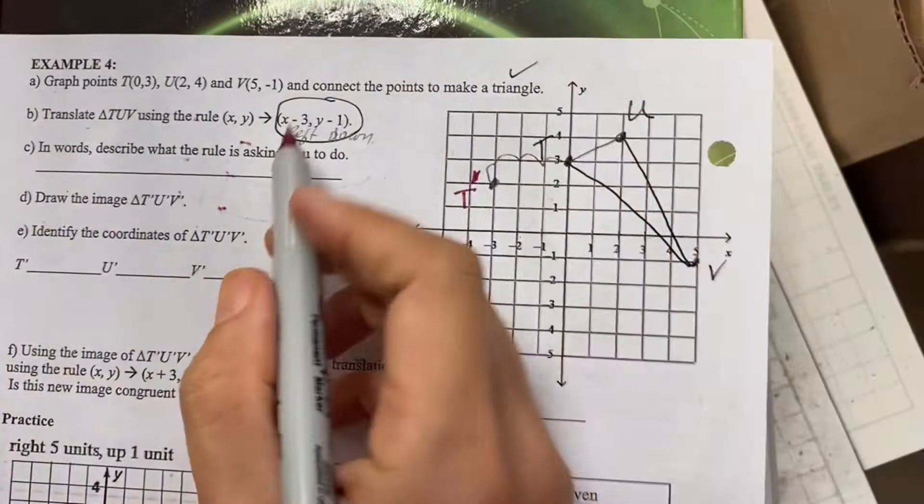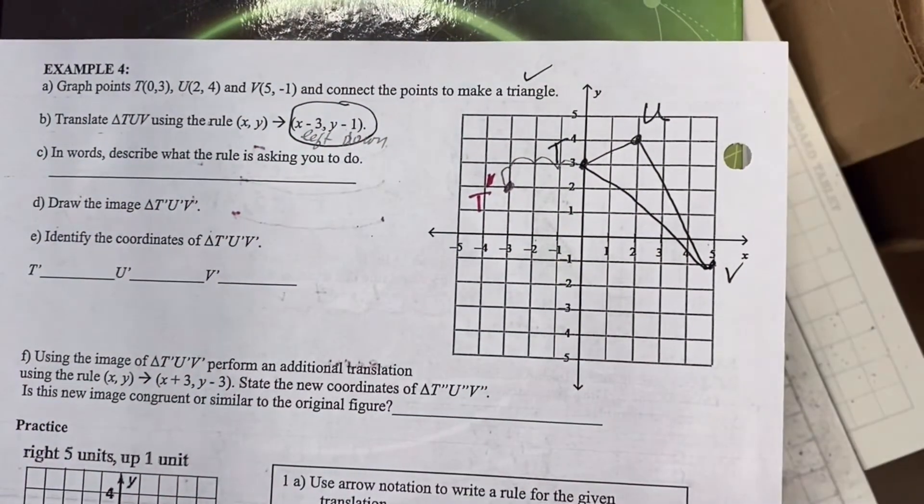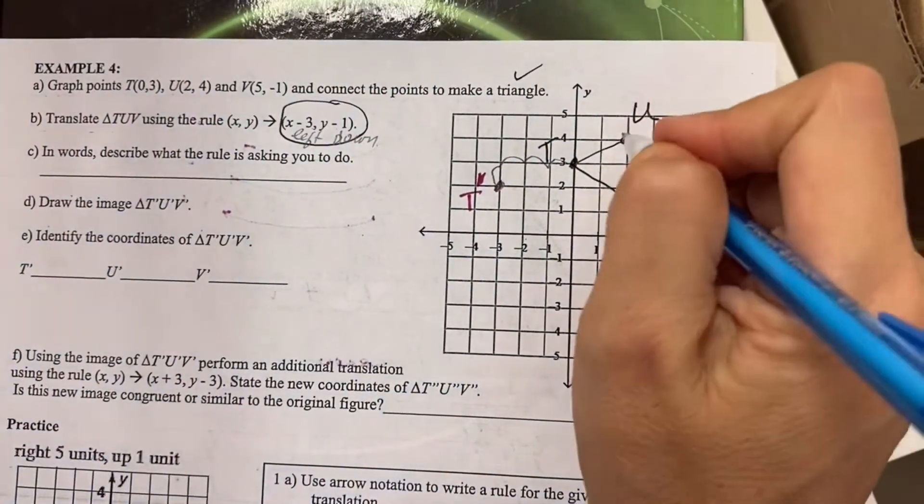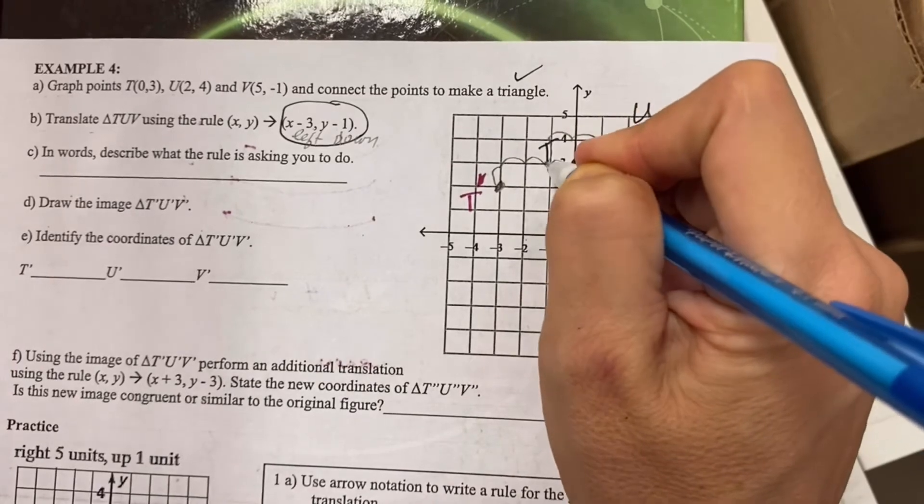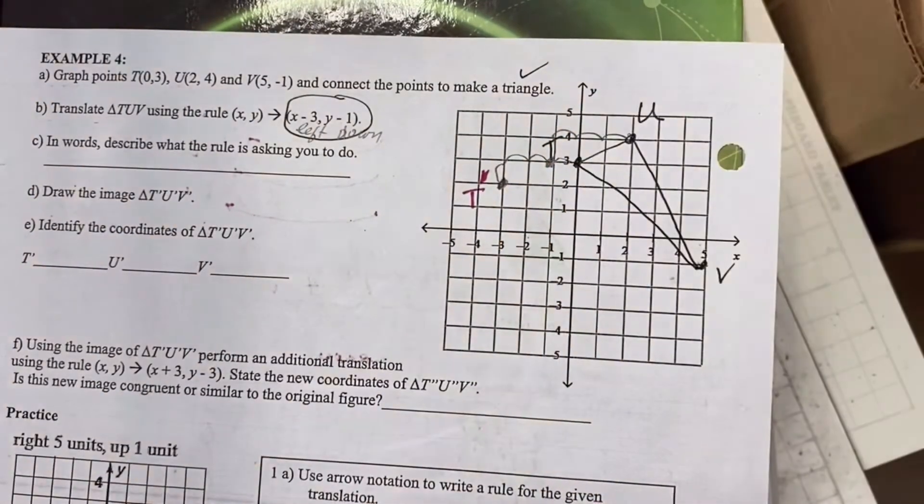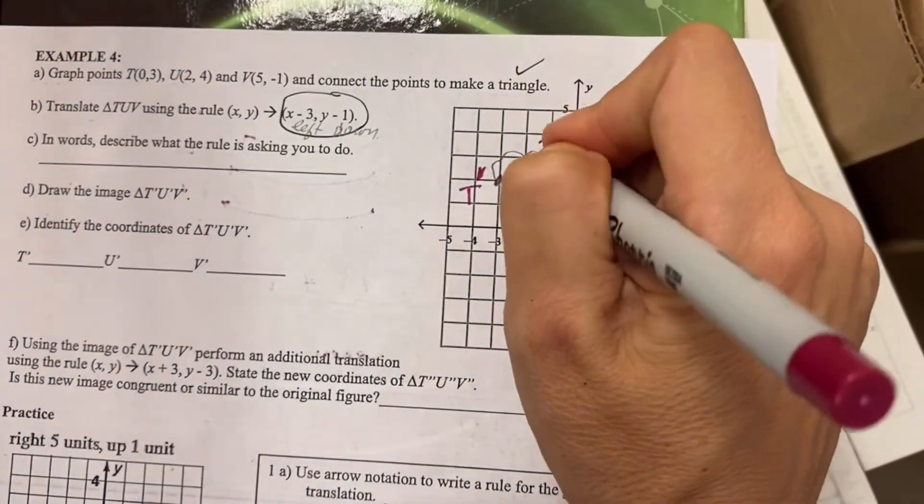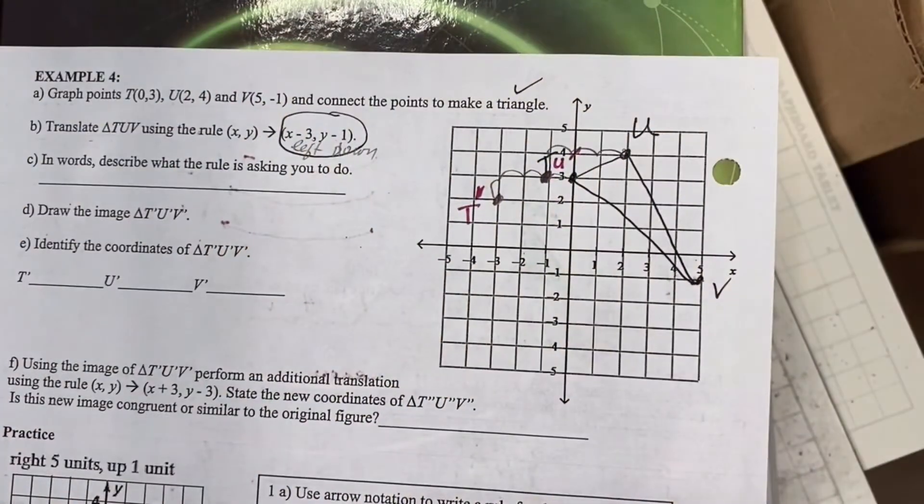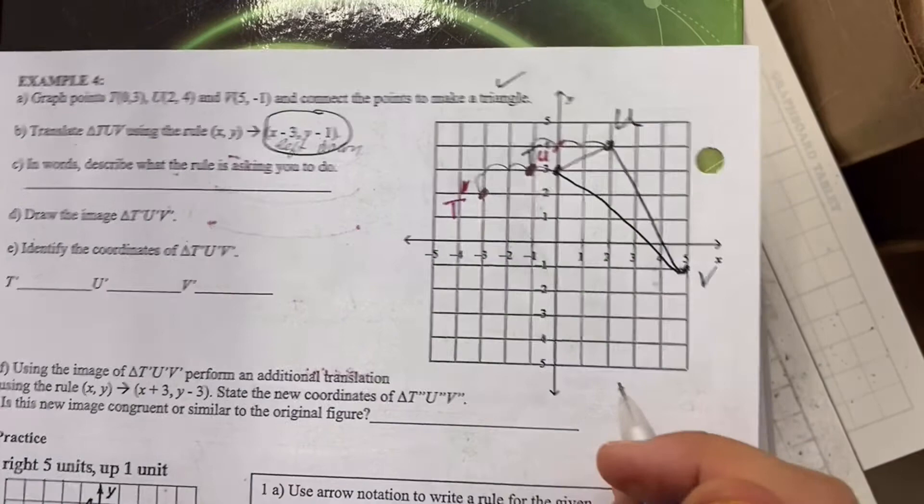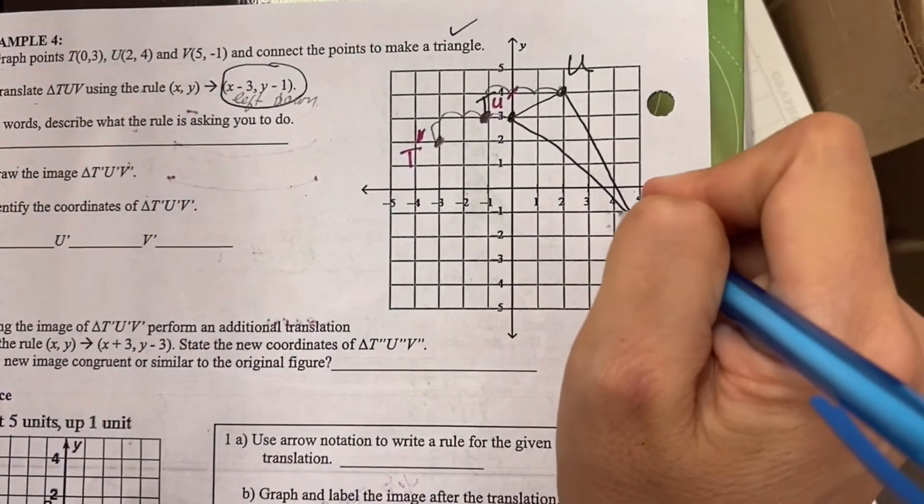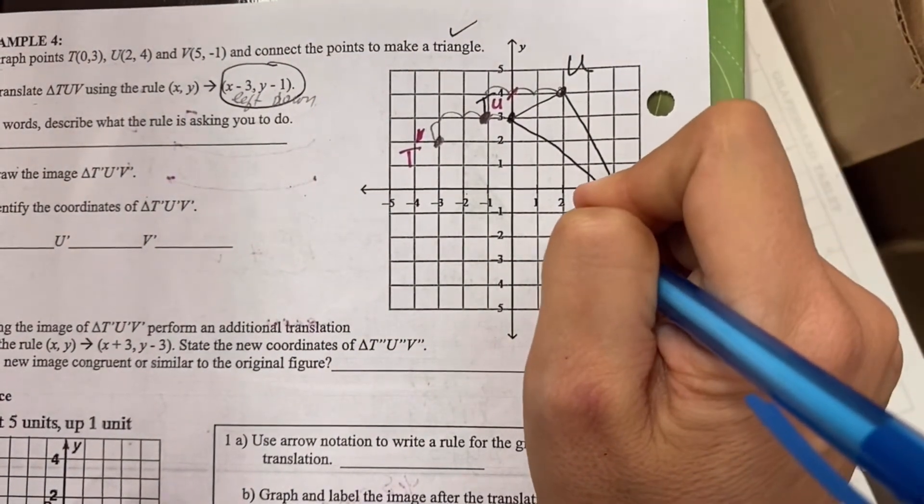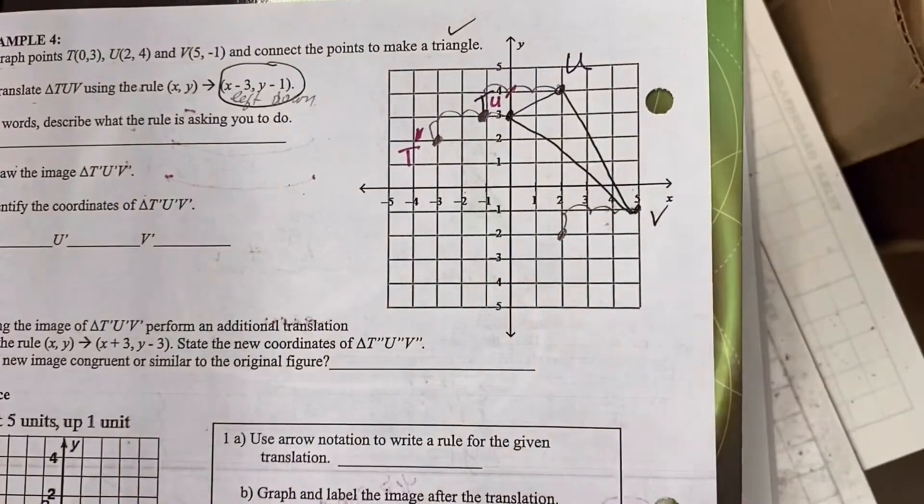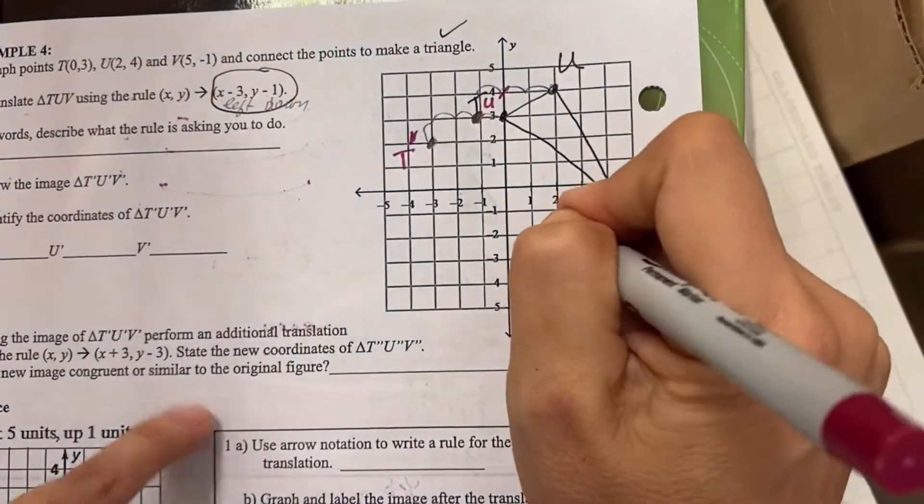So I'm going to put a prime. And then I repeat that. Left, one, two, three, down one. It gets a little messy, but this is where U prime needs to be. This is its new location. And then let's look at V. Left three, one, two, three, down one. That's our V.